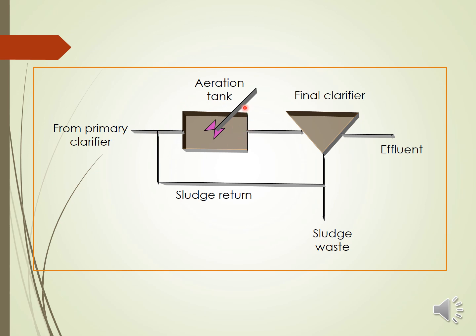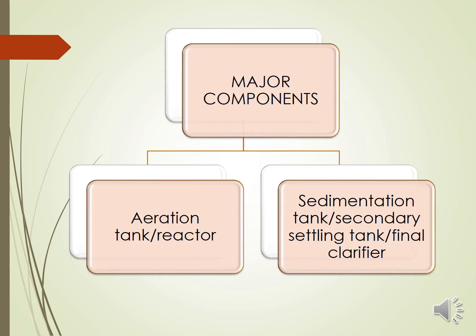In the aeration tank, the wastewater is aerated to provide oxygen for the microorganisms to grow and decompose the organic matter. In the final clarifier, the biomass or bacteria is separated from the wastewater. The clear water is discharged as effluent, and the active sludge — which contains a very active concentration of microorganisms — is returned back to the aeration tank. The two major components are the aeration tank and the sedimentation or secondary settling tank.